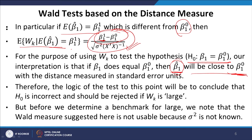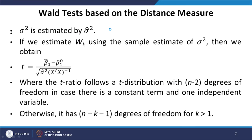Before we determine a benchmark for large, we note that the Wald measure suggested here is not usable because sigma squared is not known. So we need to replace it with the sample standard error of the estimated parameter. Sigma squared is estimated by sigma hat squared, which is an unbiased estimator of the population error variance. If we estimate Wk using the sample estimate of sigma squared, then we obtain the t statistic — the t ratio — which is beta 1 hat minus beta 1 naught divided by root over sigma hat squared x prime x inverse, which is exactly the standard error of the estimated parameter beta 1 hat.